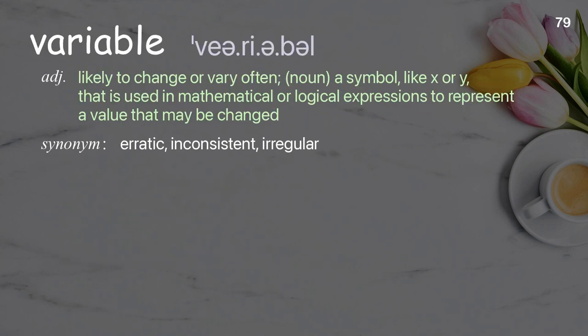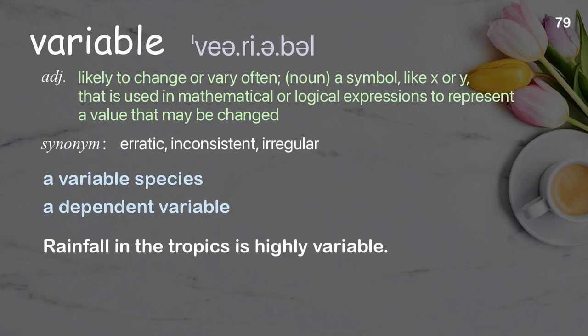Variable: likely to change very often; as a noun, a symbol like x or y used in mathematical or logical expressions to represent a value that may be changed. Examples: a variable species; a dependent variable; rainfall in the tropics is highly variable.